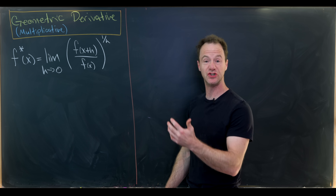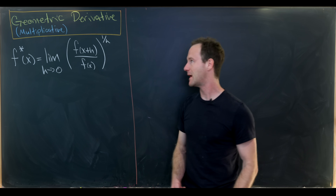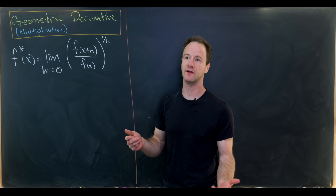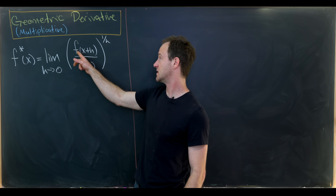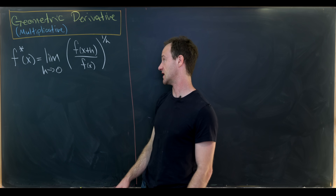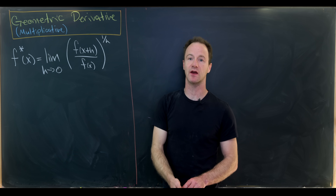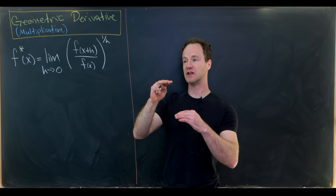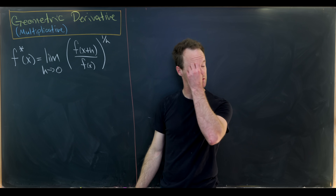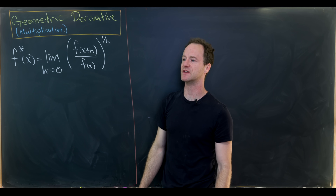Today I'd like to explore something called the geometric derivative, or sometimes called the multiplicative derivative. By definition, it is the following limit which mimics the normal derivative, except the subtraction of f(x+h) and f(x) is replaced by the quotient of f(x+h) and f(x), and division by h is replaced with exponentiation by 1/h. So it's like we're ratcheting our operations up one level. We're still taking the limit as h goes to zero, and our notation is f*(x).